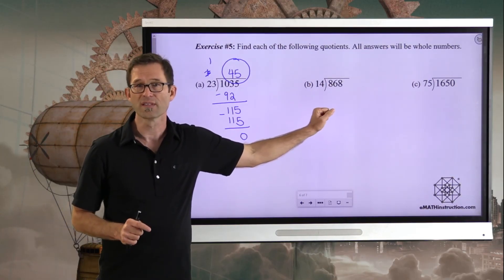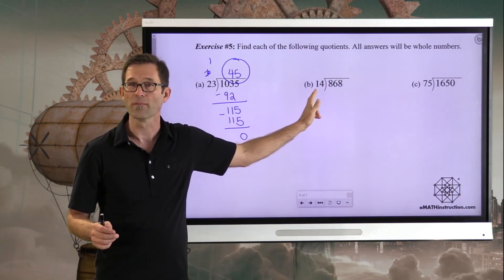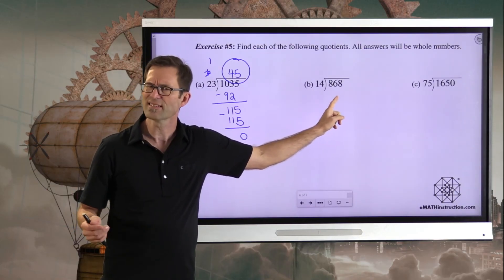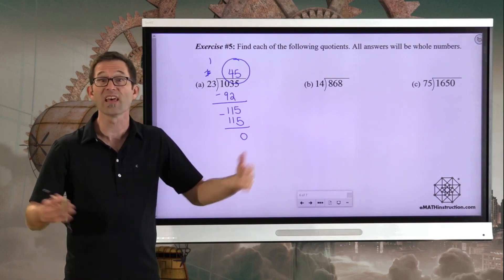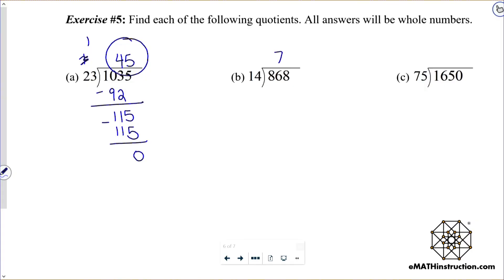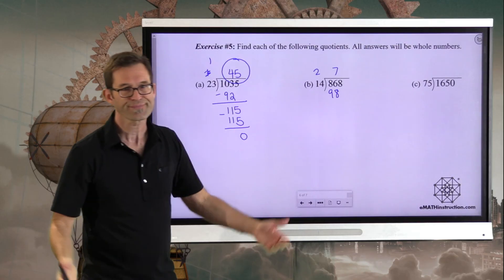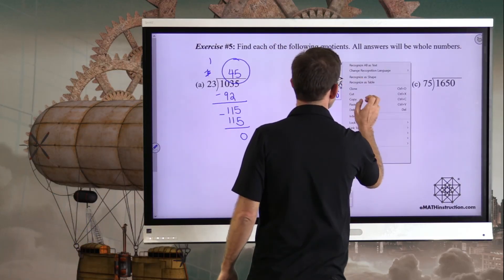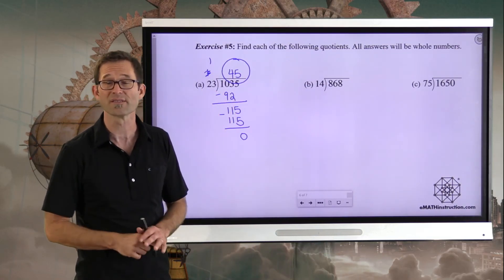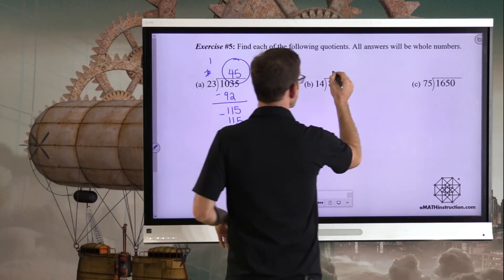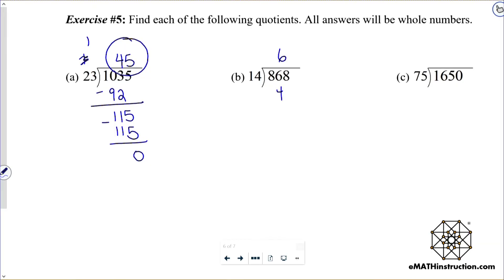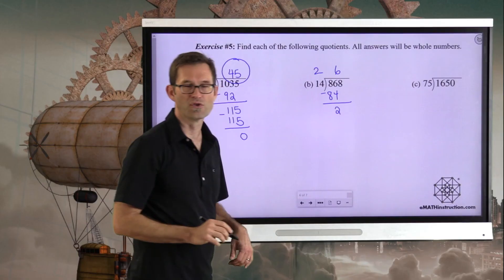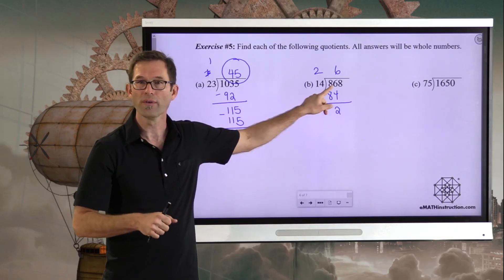14 divided into 868, or put it another way, 868 divided by 14. First thing I need to think about is how many times does 14 go into 86? I don't know. Maybe it's seven times. Let me try seven. Well, seven times four is 28. Seven times one is seven plus two more is nine. Well, nope, because 98 is bigger than 86. So that's no good. Just luckily for me, I can very easily do this. You should be writing in pencil so you can easily erase. So it wasn't seven. Let's try six. Six times four is 24. Six times one is six plus two more is eight. Oh, I like it. 84 because when I subtract, I get a remainder of just two.